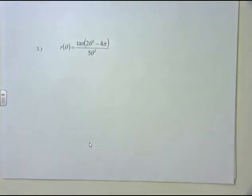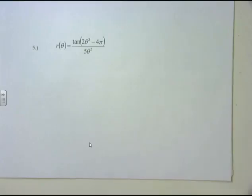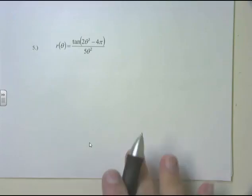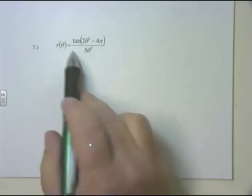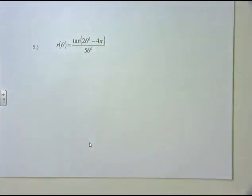Next example, using a different variable: r(θ) = tan(2θ³ - 4π) / (5θ²). Pause and think — what's the big picture? I see that big division in the middle. It's a quotient rule: derivative of the top times the bottom minus the top times the derivative of the bottom, all over the bottom squared.